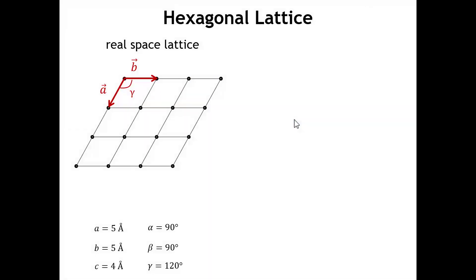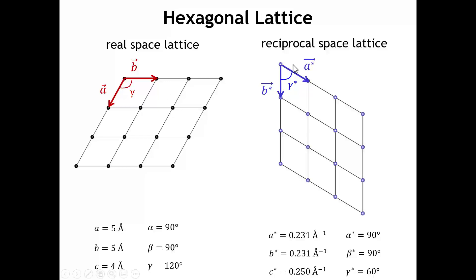Looking at a hexagonal lattice, vectors A and B are not orthogonal—there's an angle of 120 degrees between them. We can generate the reciprocal space lattice graphically: B-star must be vertical because B is drawn horizontal, and A-star must be perpendicular to A. Both A-star and B-star are perpendicular to C, since C is normal to the plane of this projection. The angle between A and B, which is 120 degrees in the real space lattice, becomes 60 degrees in the reciprocal space lattice.